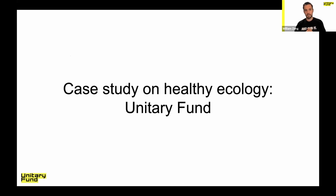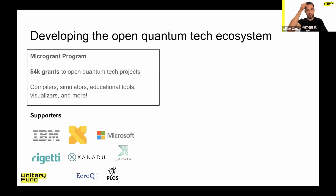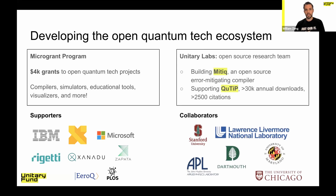I want to use Unitary Fund as a little case study on what you can get when you're in the environment of a healthy ecology, because I've been surprised by how much we've been able to do with a small group. Unitary Fund has two main programs. One is a microgrant program which gives $4K no-strings-attached grants to open quantum tech projects — we've funded compilers, simulators, educational tools, and more, supported by some of the main players in the industry. We also started a team called Unitary Labs, which does open source research. The first project is called MITIC, an open source error-mitigating compiler. We're also supporting projects like QuTiP.